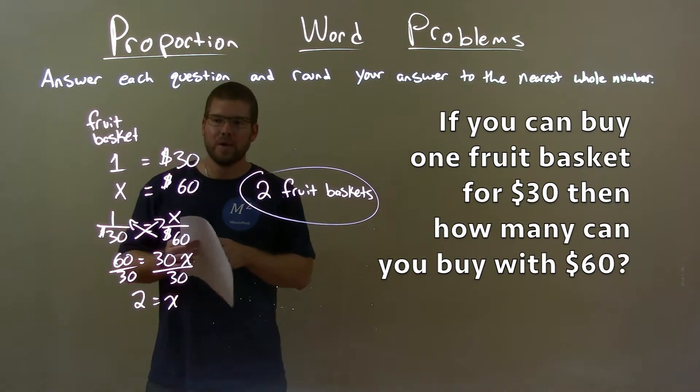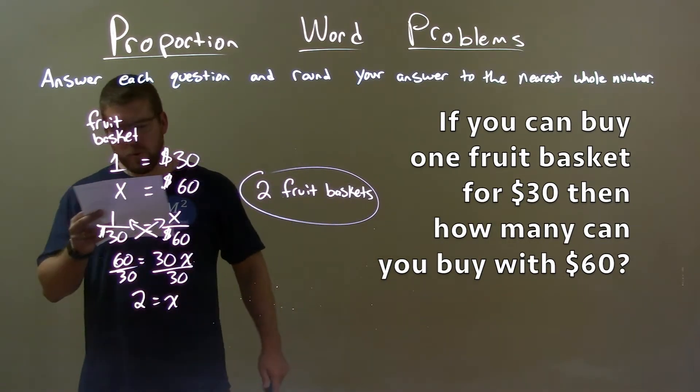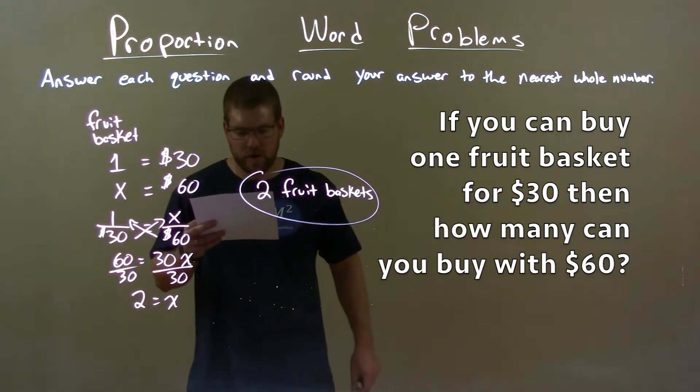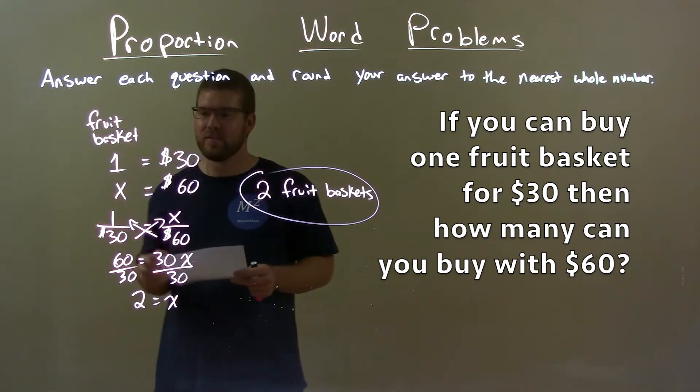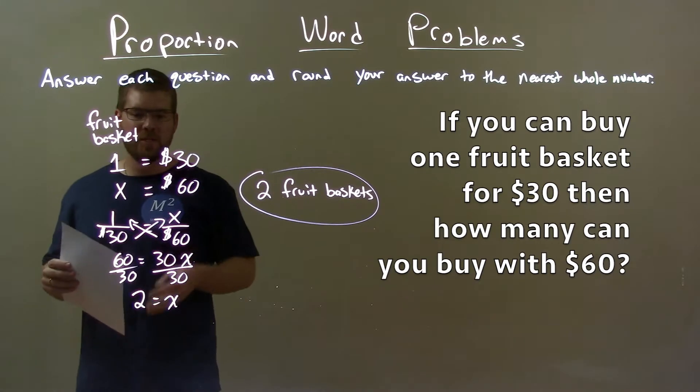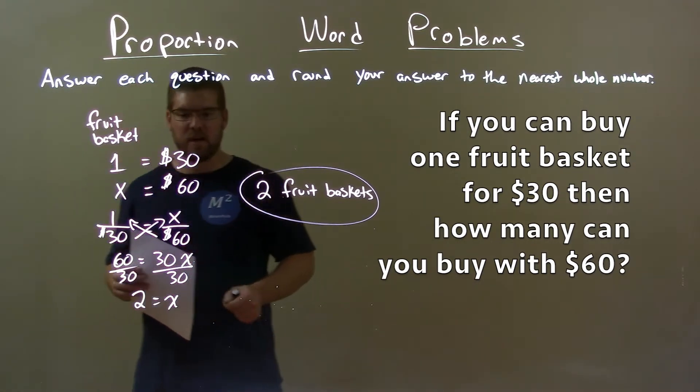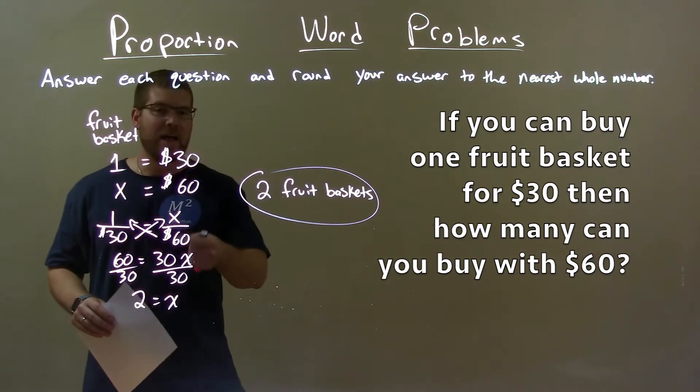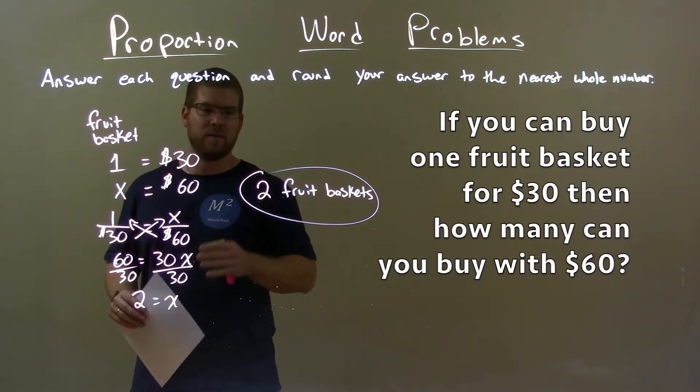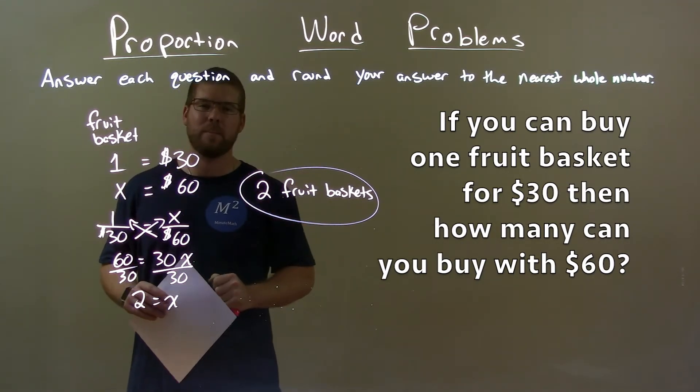So quick recap, we're given the question, if you can buy one fruit basket for $30, then how many can you buy with $60? Well, with that information, we set up a proportion. 1 over $30 equals x over $60. Then we solved for x. That gave us two, and so for $60, we could get two fruit baskets.